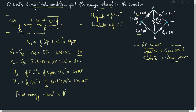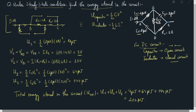To find the total energy stored in the circuit, take the sum of all energies calculated: U1 + U2 + U3 = 4 microjoules + 64 microjoules + 144 microjoules = 212 microjoules. This is the total energy stored in the circuit.